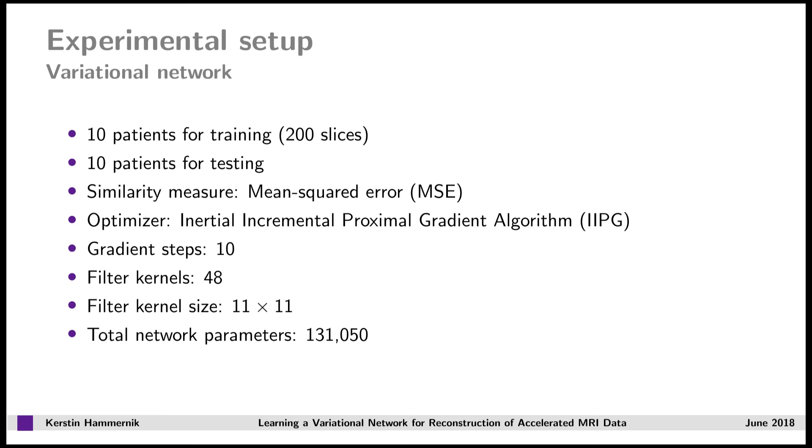We learned a total number of 10 gradient steps, and in each of these steps we learned 48 filter kernels of size 11 times 11 along with their corresponding activation functions and data term weights, which corresponds to about 130,000 network parameters.